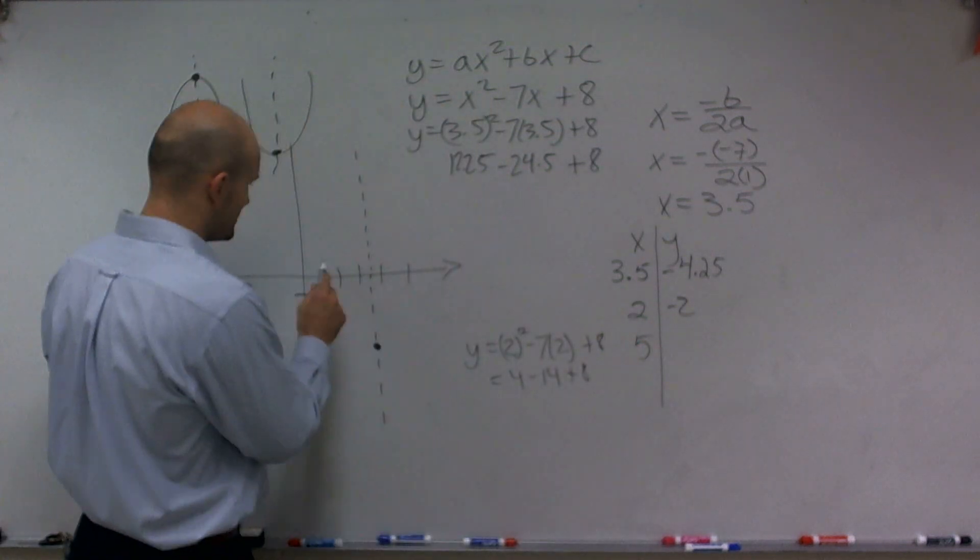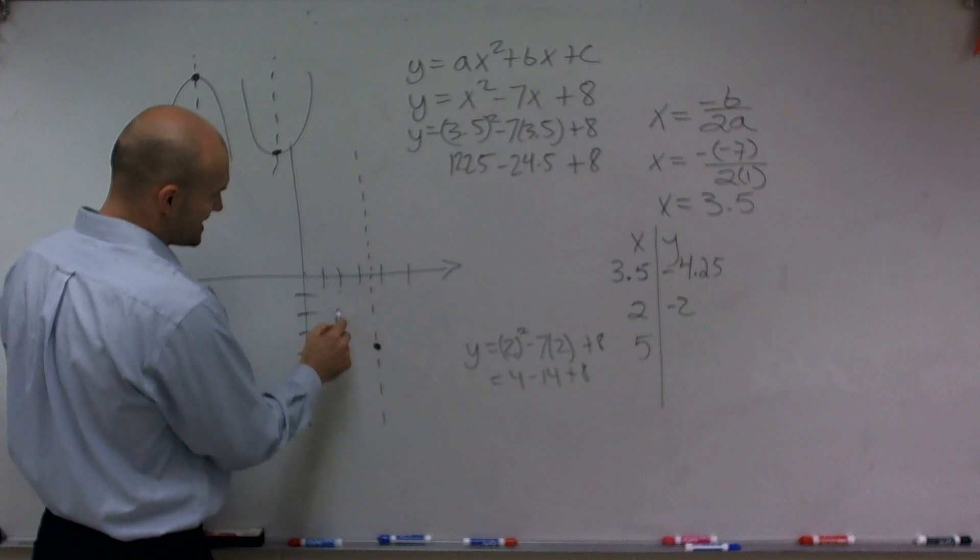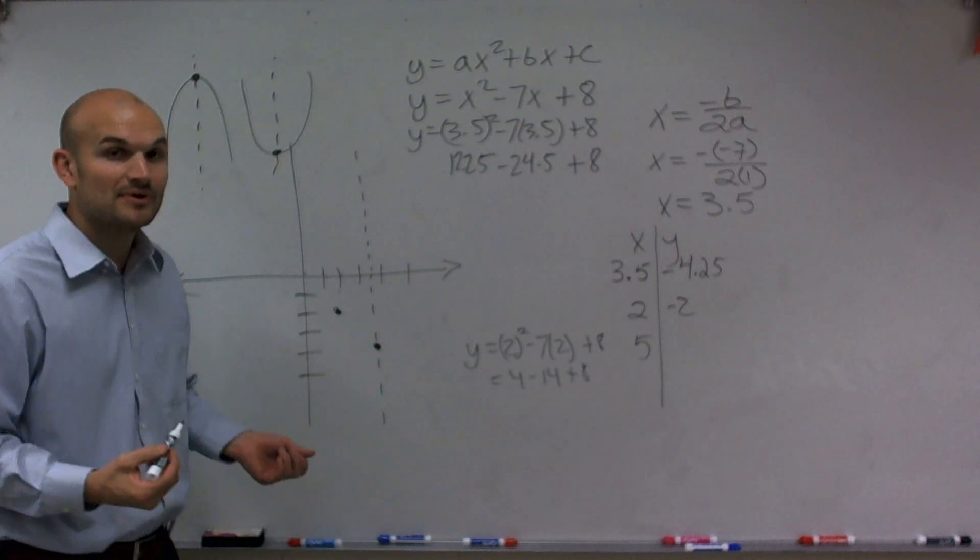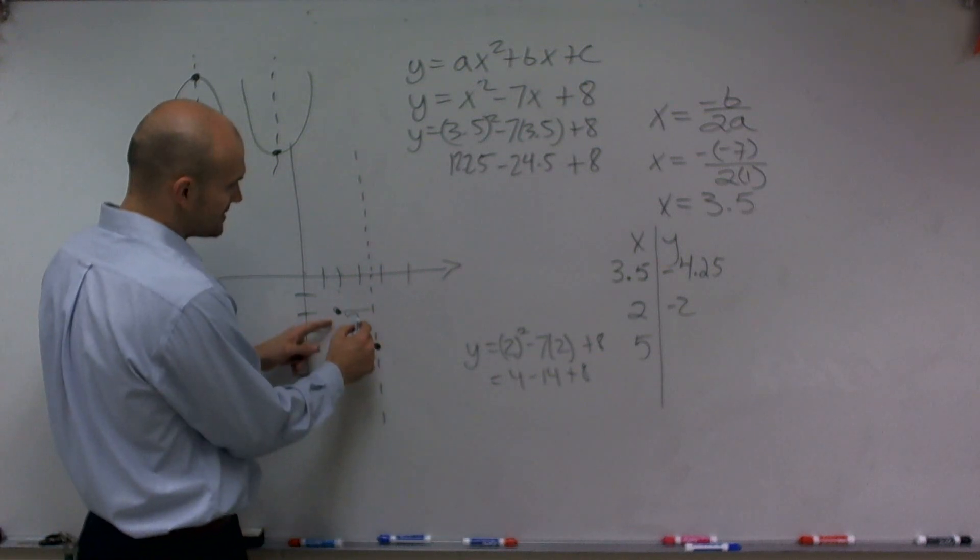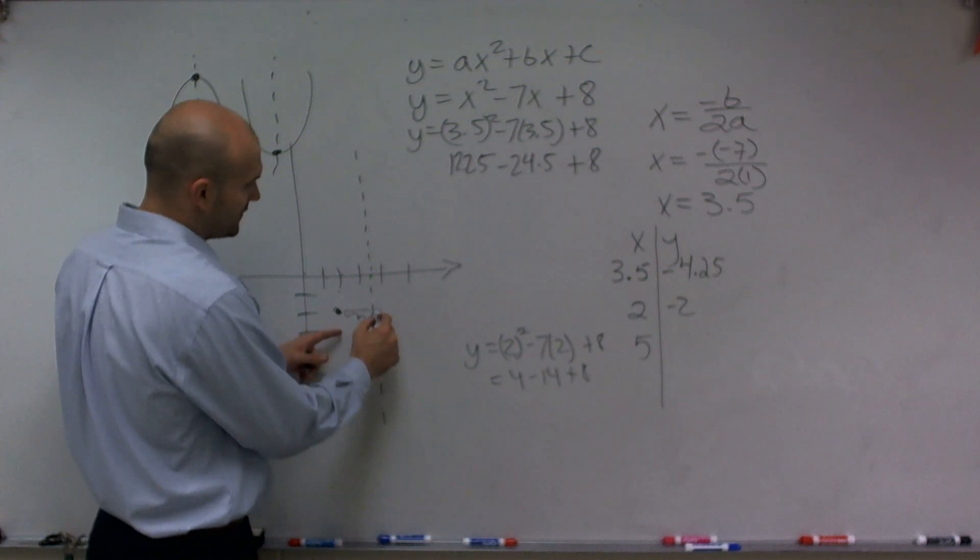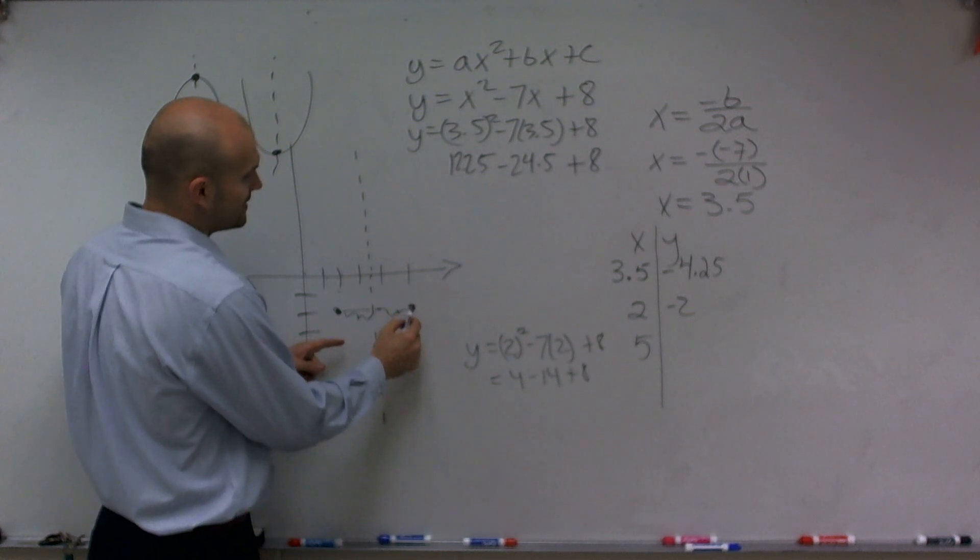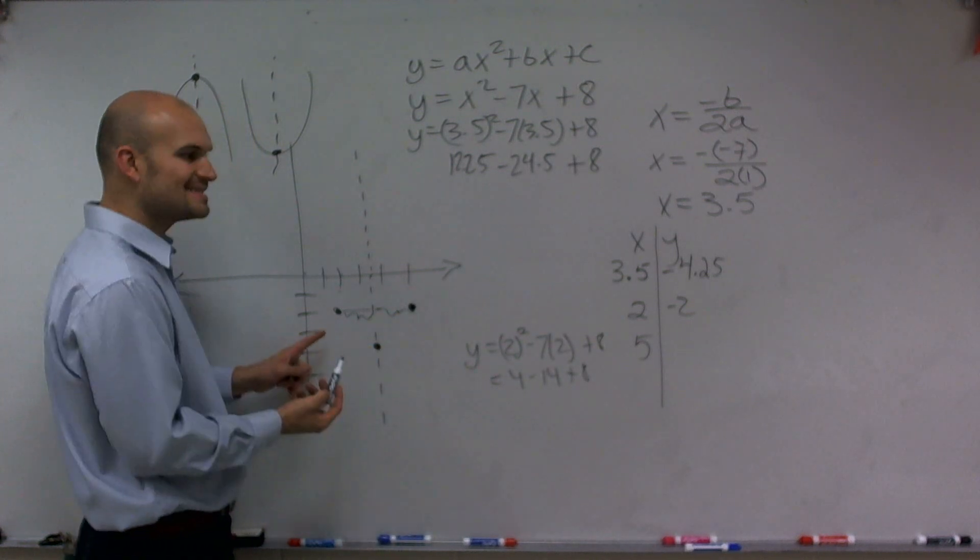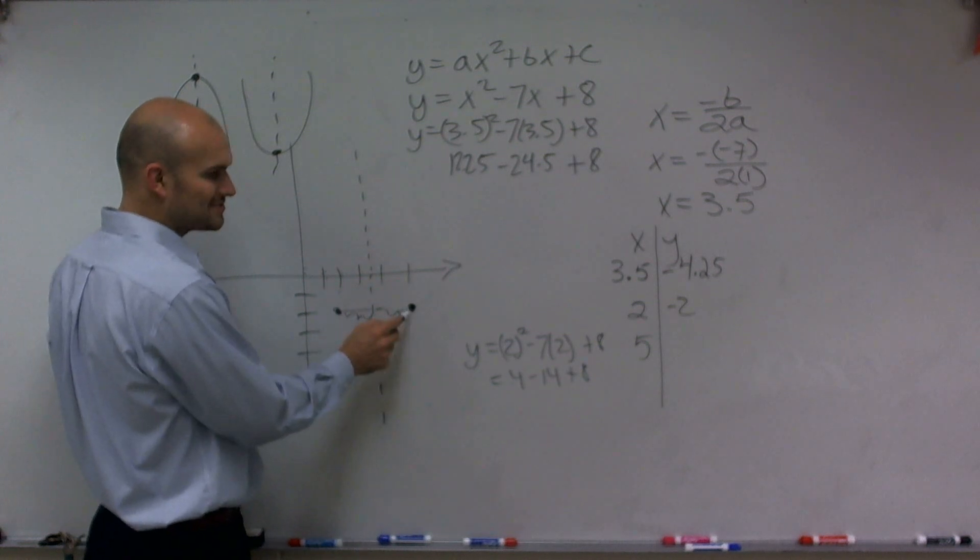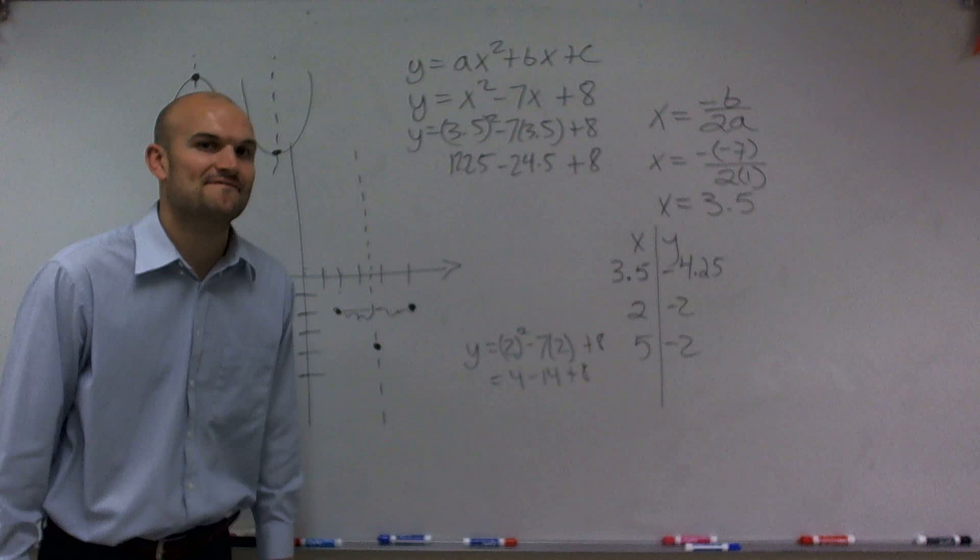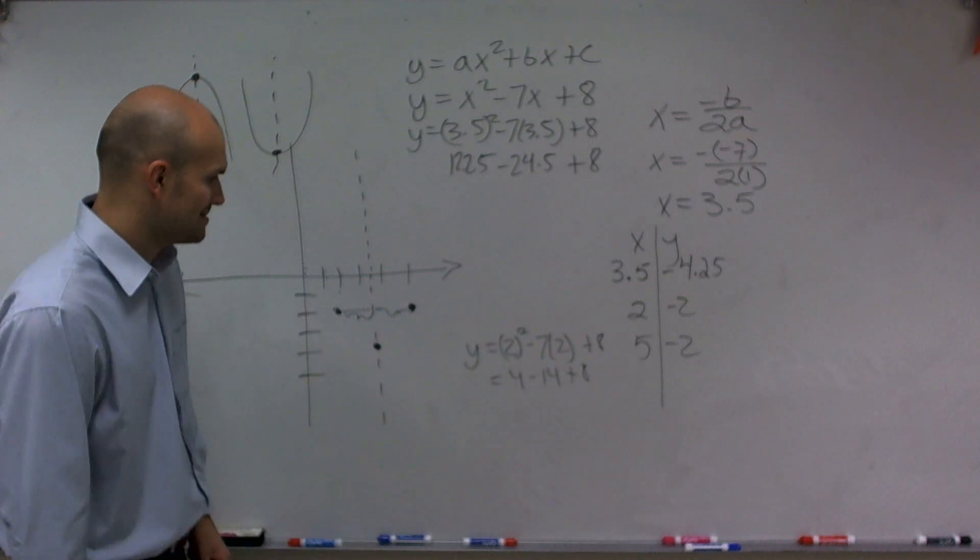So let's go and plot this point. So at 2, I'm going to go down negative 2. Now, remember, since my parabola is symmetrical about this point, this distance is going to be the same over here. And what I notice is this actually is the same point of 5. So actually, I don't even have to do the work. But at 5 negative 2, I have the exact same point.